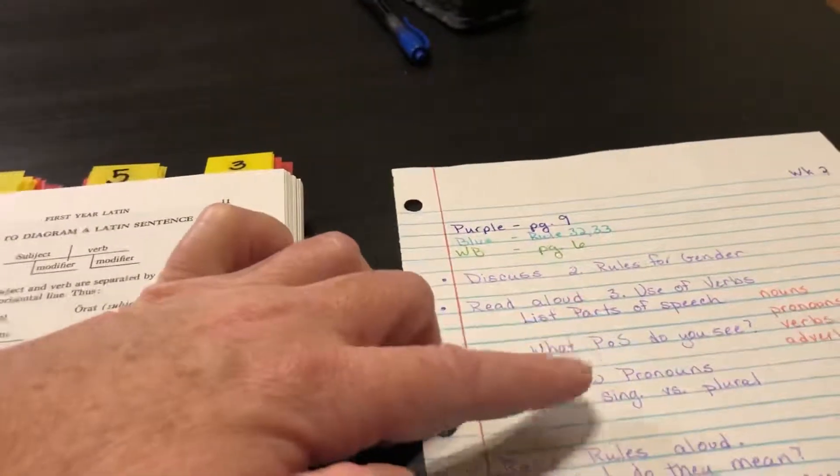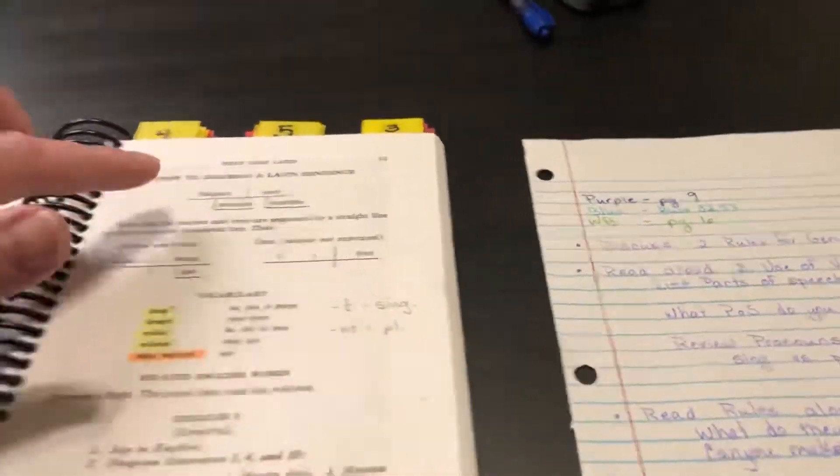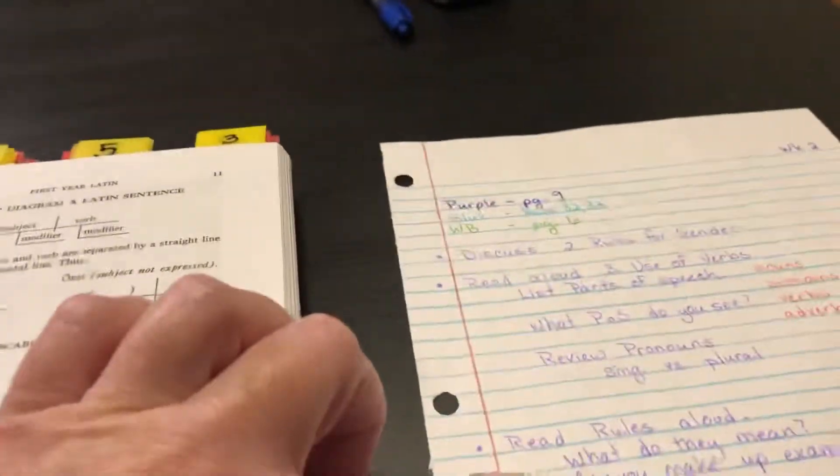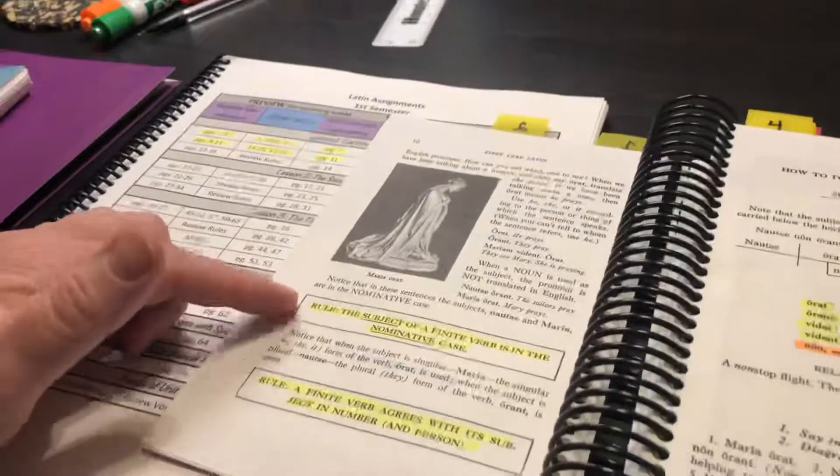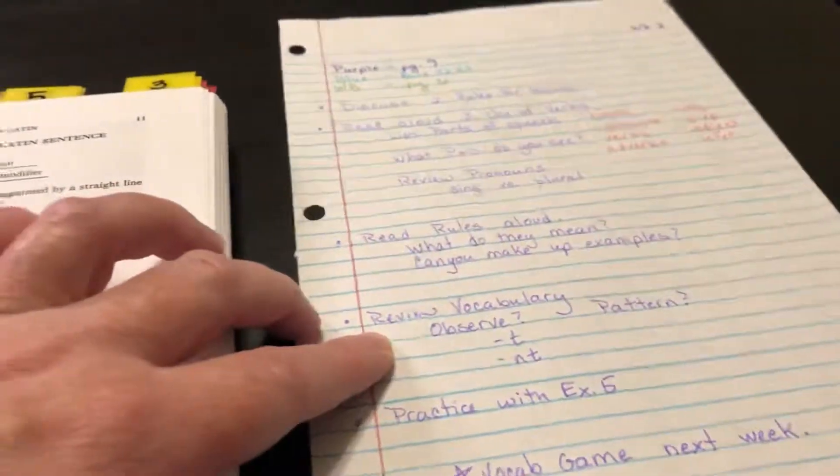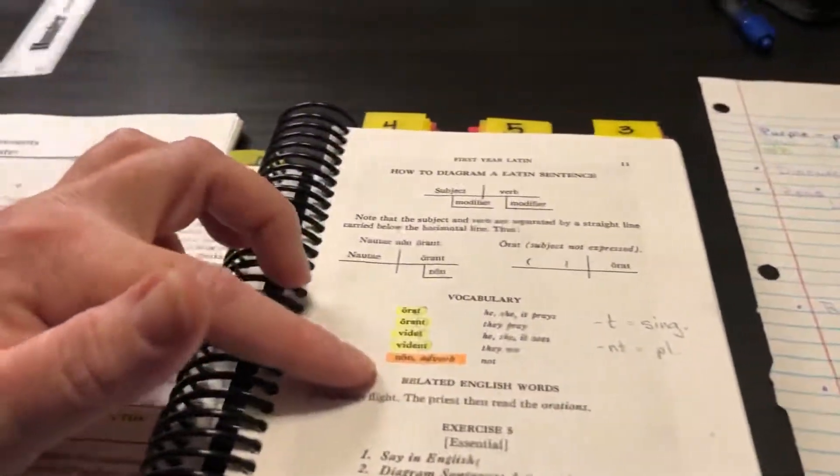And then we reviewed pronouns, the different first person, second person, singular and plural. And then we read the rules aloud, these right here, and what do you think they mean? And then we got to the vocabulary and I just have them look at it—what do you notice?